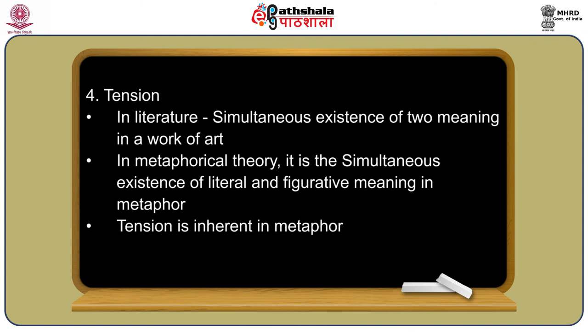The fourth factor in the metaphor is tension. In literature, the New Critics use the term to mean simultaneous existence of two meanings in a work of art. The theory of metaphor borrows this term to mean the simultaneous existence of literal and figurative meaning in metaphor. As Empson has noted in his study of ambiguity, this tension is inherent in metaphor. As in the case of poetic meaning in general, metaphorical meaning arises from a harmoniousness of the opposites. It is through the process of interaction that this seeks to reduce the distance between tenor and vehicle without really eliminating either of them. The resulting tension gives the metaphor its figurative meaning.